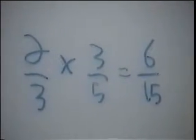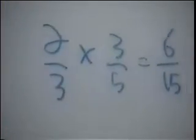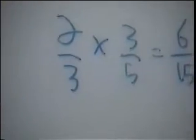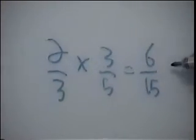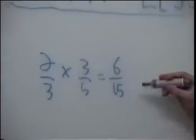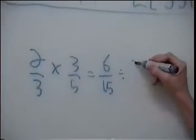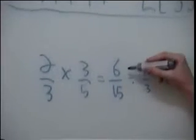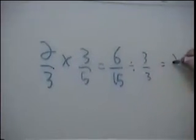That wasn't so hard, was it? But one other thing you have to do is make sure it's in the simplest form. So, the biggest number that goes into six and fifteen is three. You divide it by three over three. Six divided by three equals two, and fifteen divided by three equals five.